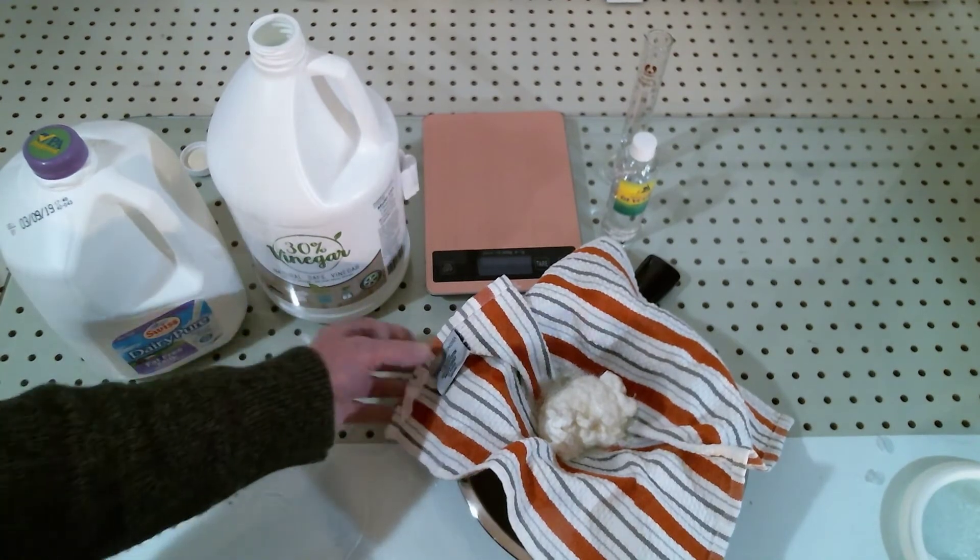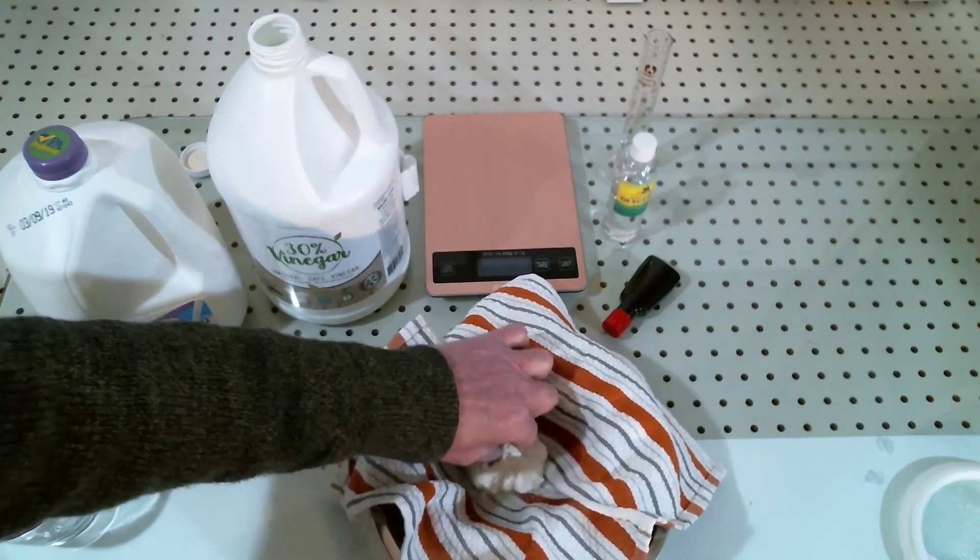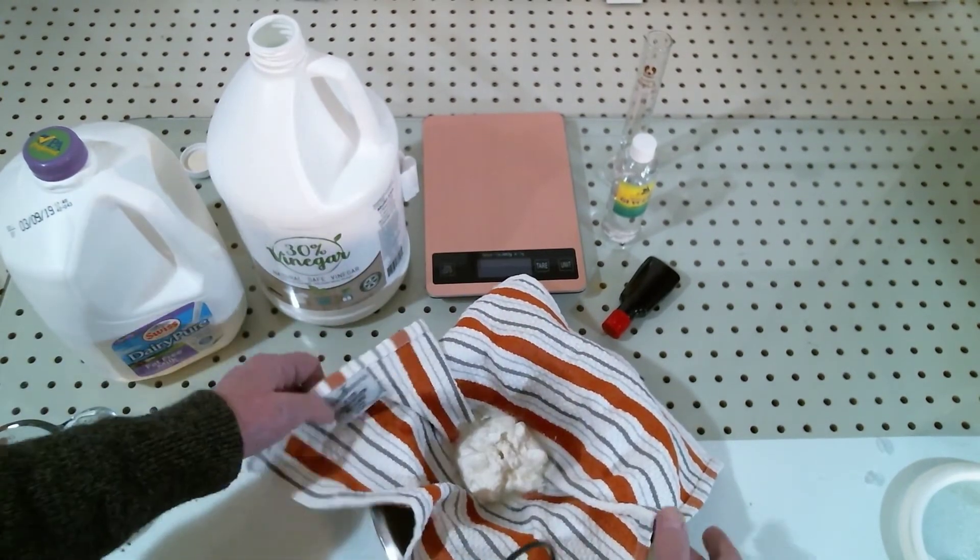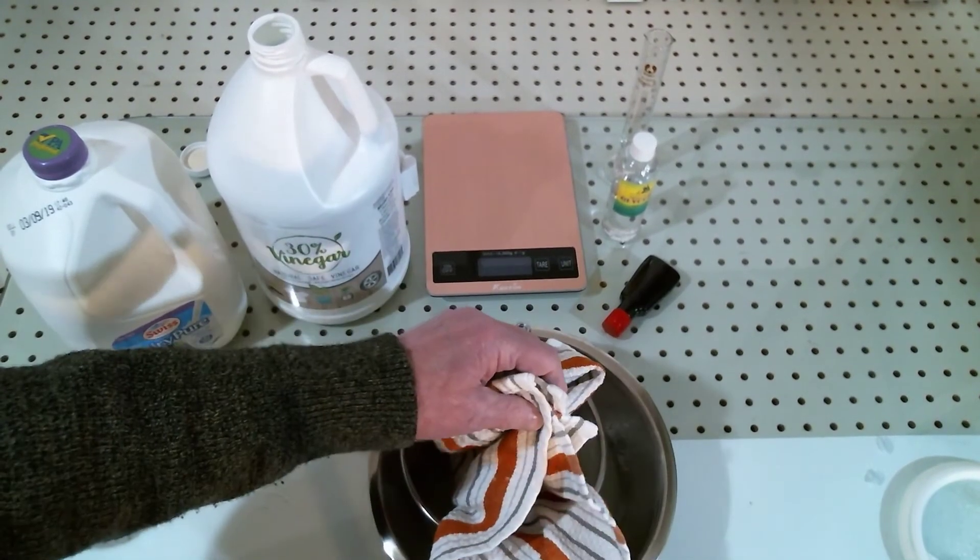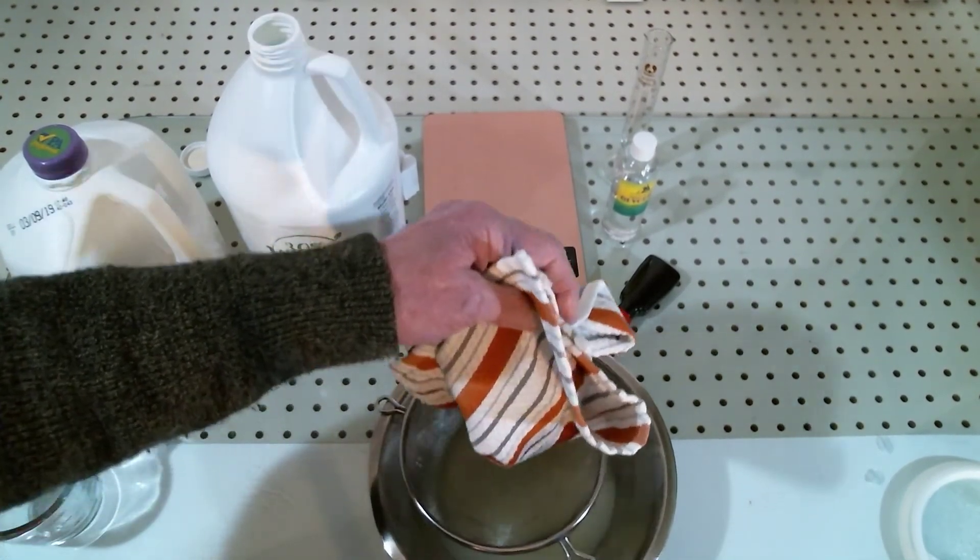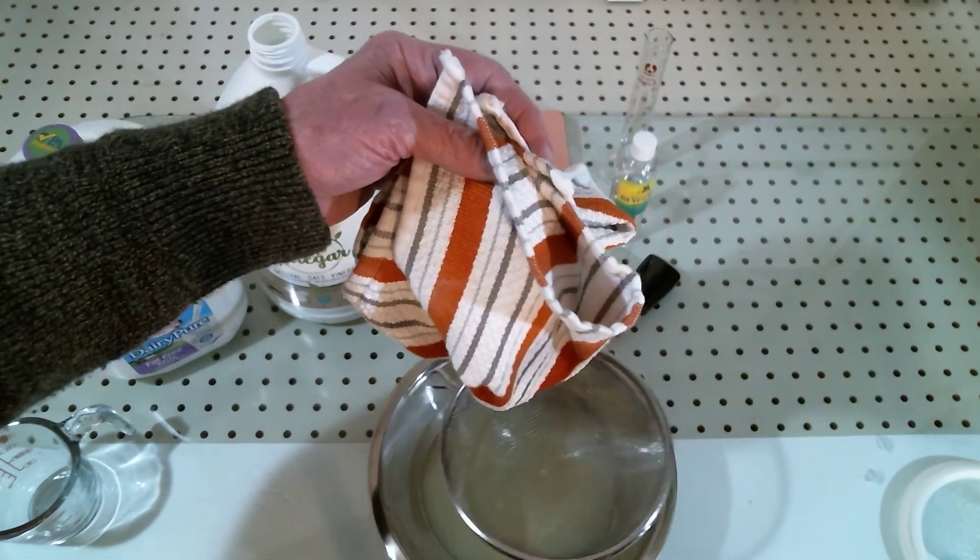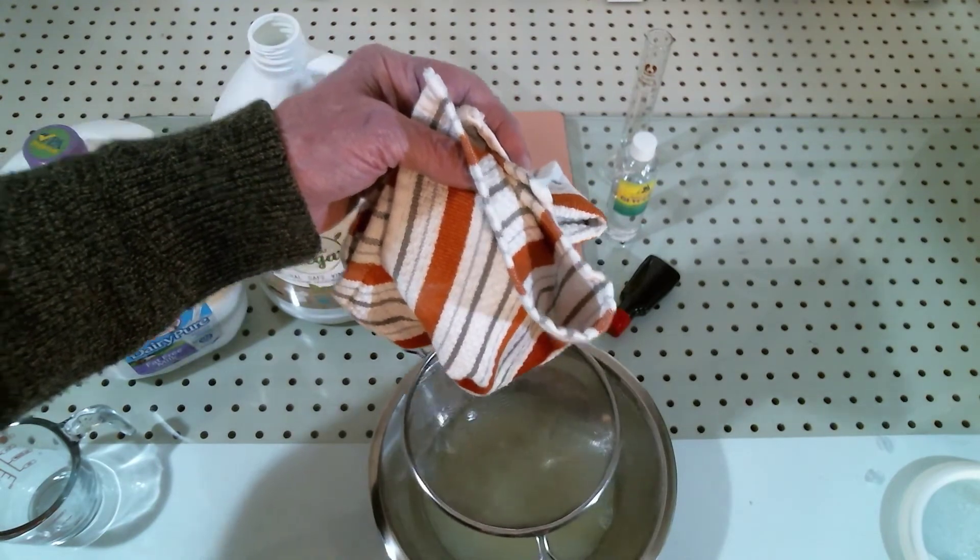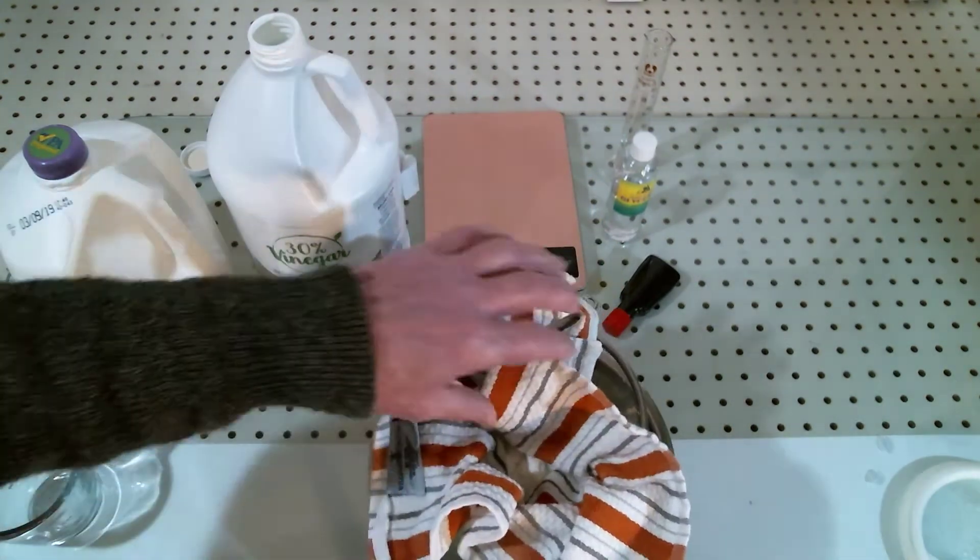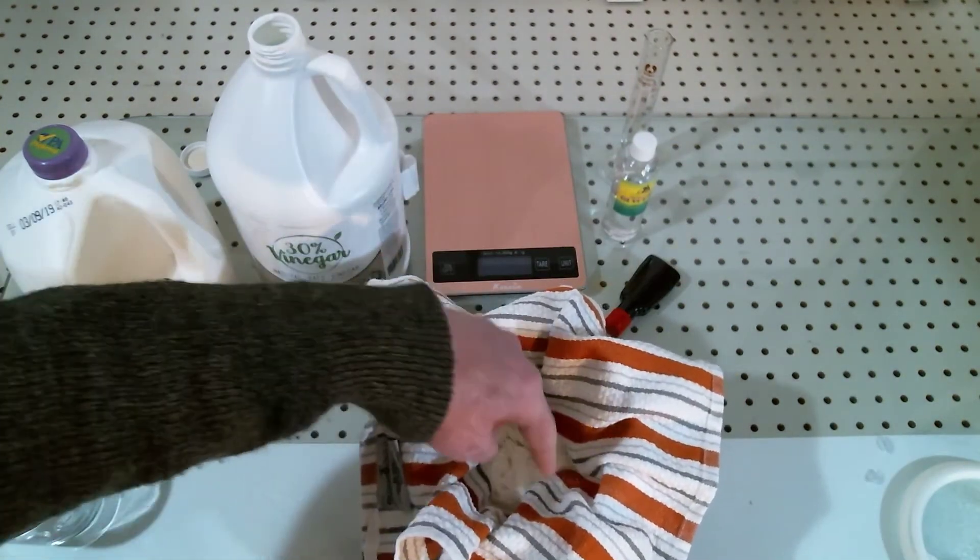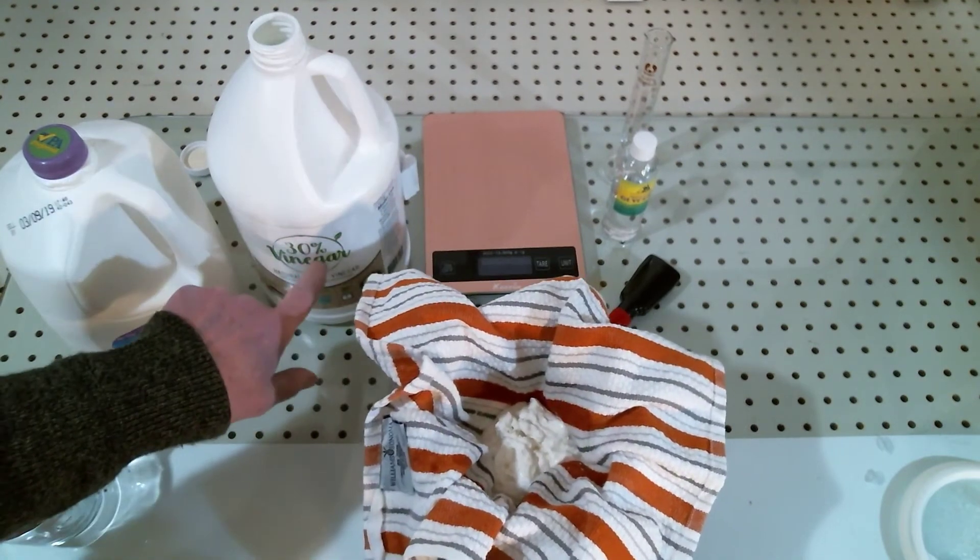I think it's ready. Now what we have here is a nice gooey clump of casein protein. I'm just going to pick this up to show you what's left in the bottom—that is the whey. We're not going to use this, we're not going to use the yellow stuff. So I'm going to stop the video here and empty that, because what I'm going to do when I come back is rinse this with a little bit of water because now what we want to do is wash out the vinegar.